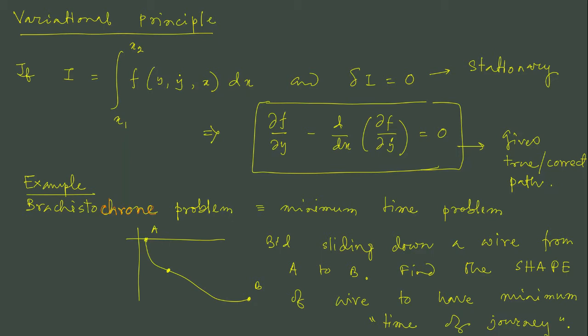We have already seen the variational principle, actually what we have seen is Hamilton's principle. Hamilton's principle says that you write Lagrangian, which is a function of say y, y dot and t, then you integrate over t, that gives you a quantity j. If you demand that integration is stationary over the right path, then that leads to the equation of motion.